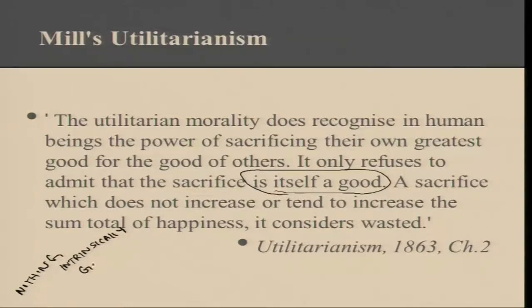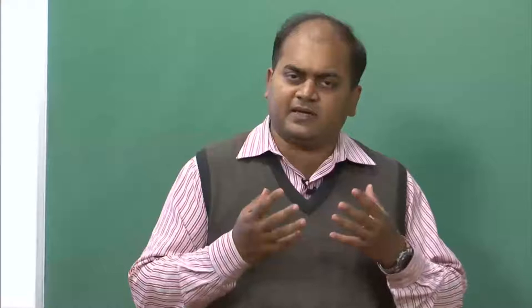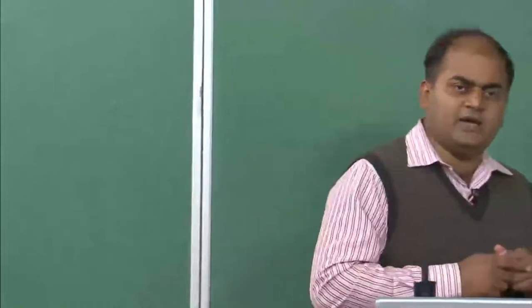What is Mill basically trying to put forth here? He is trying to put forth that there is nothing in a sacrifice that is good in itself — there is nothing intrinsically good in a sacrifice, nor is there anything intrinsically good about any act. The refined Utilitarian, as per Mill, admits that people do make great sacrifices — sacrificing their greatest good for the good of the collective. But there is nothing in that sacrifice which makes it a good by itself. The only thing that makes that sacrifice good is the consequence that it achieves or tends to achieve.